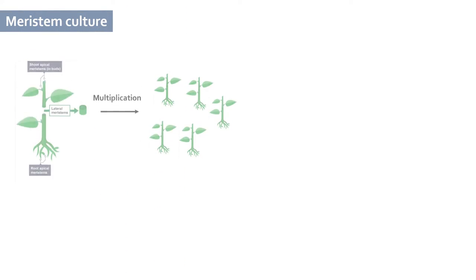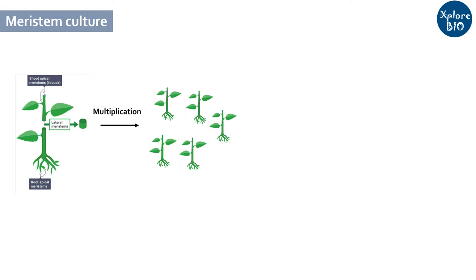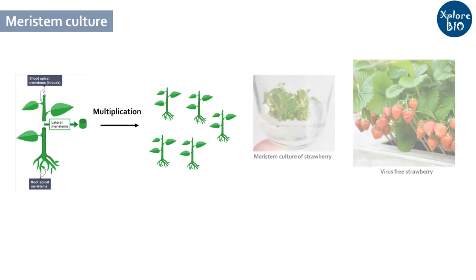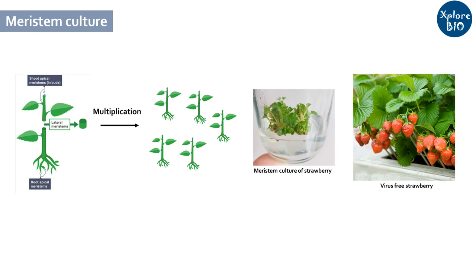For meristem culture, shoot apical meristem and root apical meristem — which comprise undifferentiated, fast-dividing cells — serve as excellent sources when the purpose is micropropagation and developing virus-free plants.